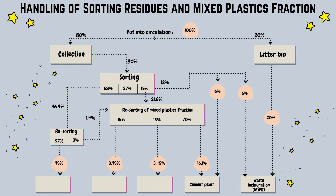From the resorting section, it is broken down into two parts. The first part is 97% (45%) for material recovery — PET flakes — while the remaining 3% (1.4%) goes to resorting of mixed plastics fraction. Resorting of mixed plastics fraction is divided into three parts: 15% (3.45%) for gasification to methanol, 15% (3.45%) for blast furnace, and 70% (16.1%) for cement plant.